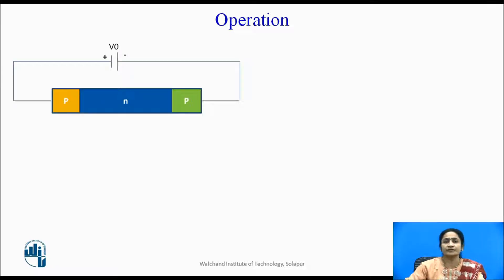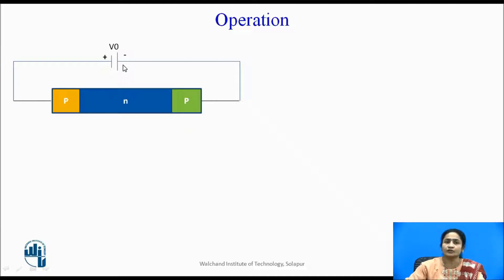Now let us see the operation of the BARITT diode. As seen in the structure, it is a two-terminal device with back-to-back diodes connected. This is a diode with the P⁺NP⁺ structure. These diodes are connected to a DC voltage: the left-hand P-type is connected to the positive terminal, and the right-hand P-type is connected to the negative terminal of the battery. Between these two junctions, a drift space region — essentially a depletion region — is formed.